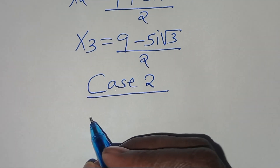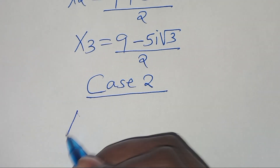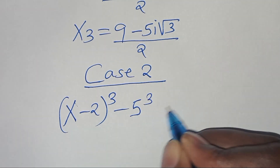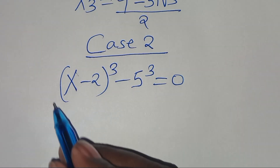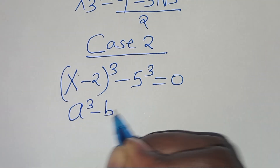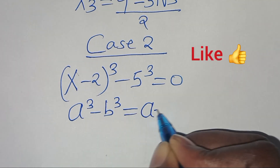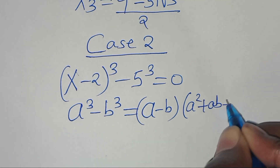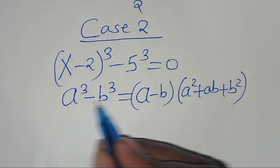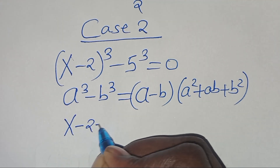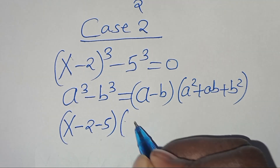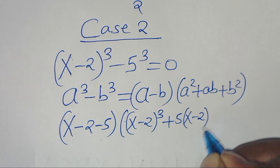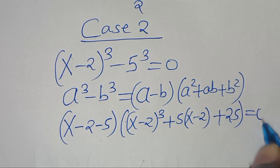Now in Case 2, we have (x minus 2)^3 minus 5^3 equal to 0. This is of the form a^3 minus b^3, which we express as (a minus b)(a squared plus a times b plus b squared). Applying this identity: (x minus 2 minus 5) times [(x minus 2)^2 plus 5(x minus 2) plus 25] equal to 0.